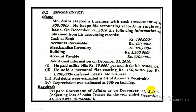Statement of affairs hamein banani hai December 31, 2010 ko. Adjusted loss — jo profit and loss ka — inhon ne directly hamein dhi diya hai: 92,500. Iska matlab hai profit and loss hamein nahi banani padegi. Hamein directly statement of affairs, jisai hum balance sheet kehte hain, us pe kaam karna hai. Toh let's start.